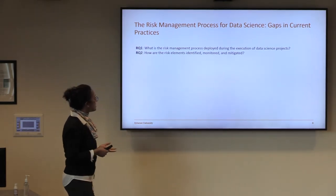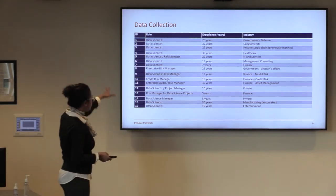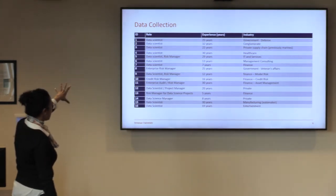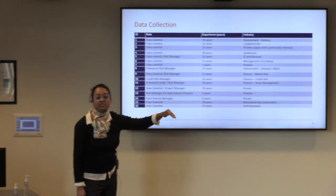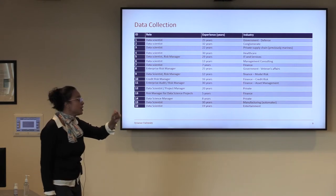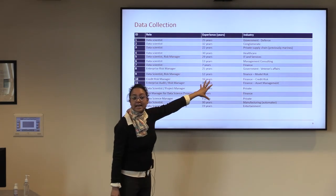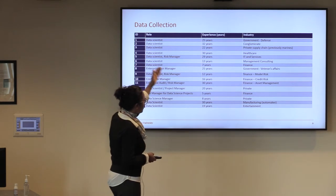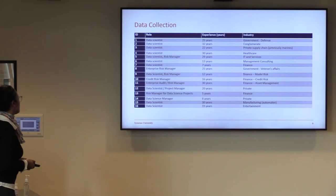The second question was: how are risk elements identified, monitored, and mitigated? We filed for an IRB and did selective sampling to find participants. Our sample of 16 was quite diversified — we set a criteria of only interviewing those with more than two years of experience, given the intricacy and sensitivity of risk management. Industries represented included government, healthcare, IT, management, finance, manufacturing, and entertainment.